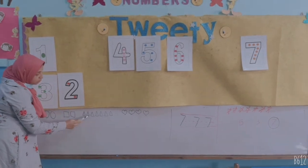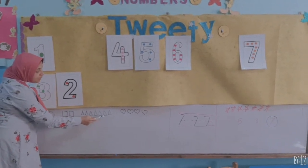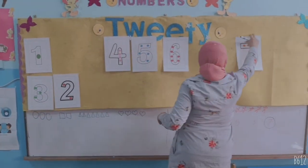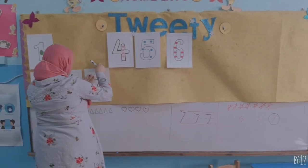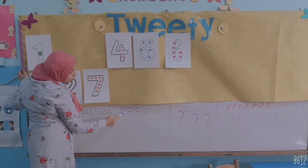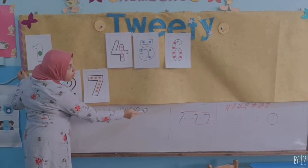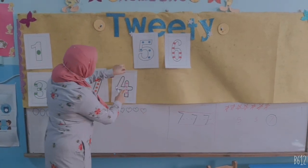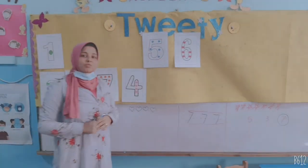1, 2, 3, 4, 5, 6, 7. 1, 2, 3, 4, 5, 6, 7. Okay, goodbye. Goodbye.